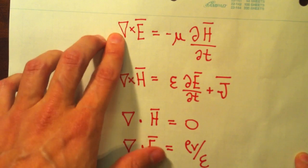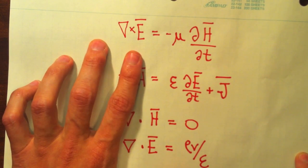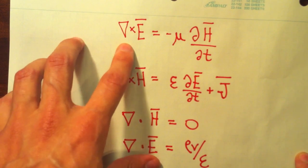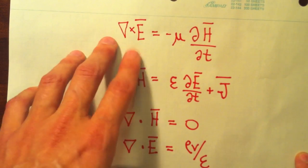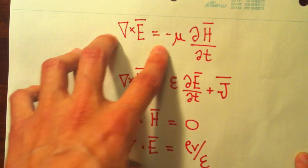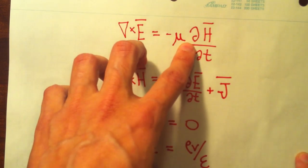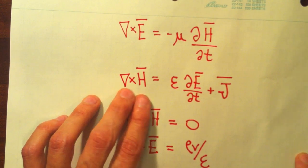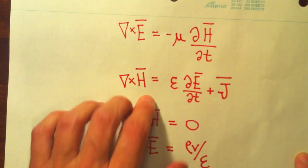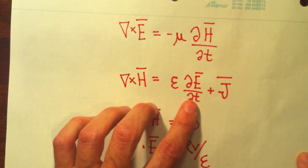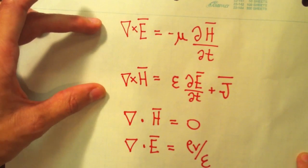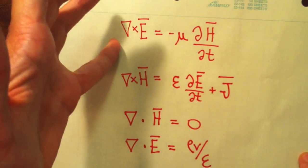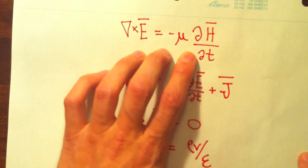So here, this symbol, del cross E, is the curl operator. What this is saying is a spatially varying E field is going to give rise to a time varying H field. Similarly, an H field that varies in a spatial position gives rise to a time varying E field.